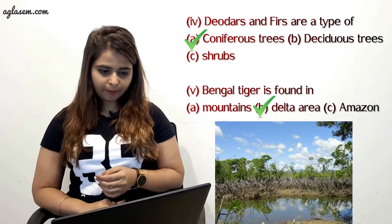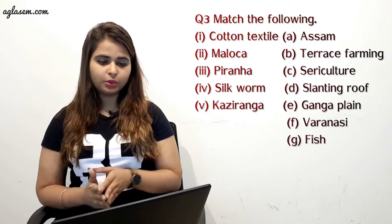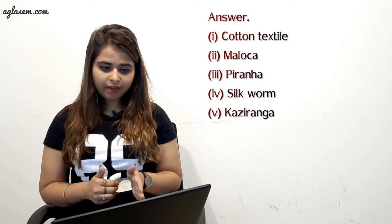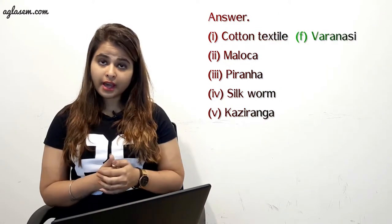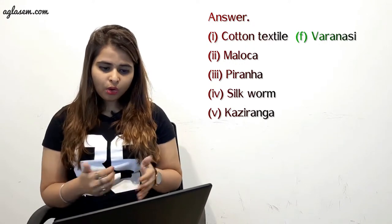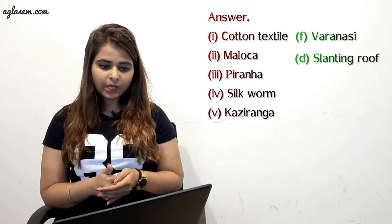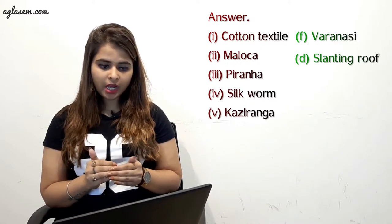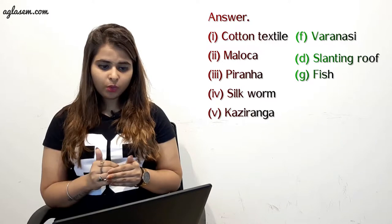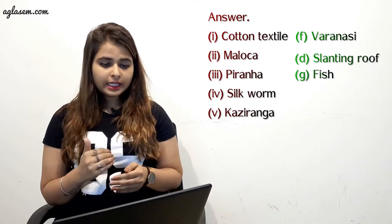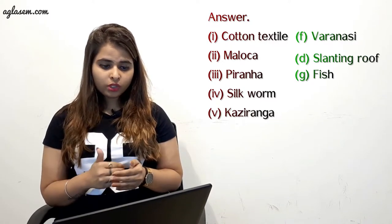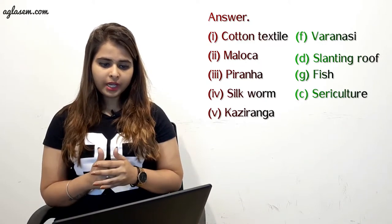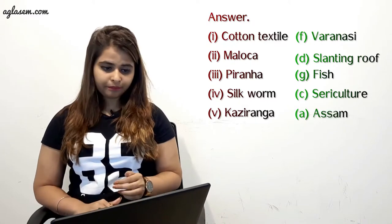Question 3: match the following. You can see the question on screen. The answers are: A) cotton textile is connected to Varanasi; B) maloca is connected to slanting roof; C) piranha is connected to fish; D) silk farm is connected to sericulture; and E) Kaziranga is connected to Assam.